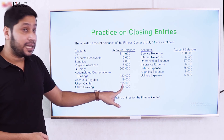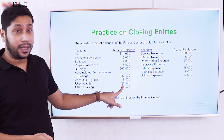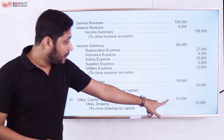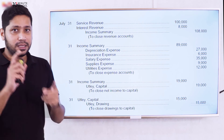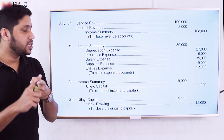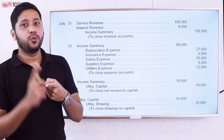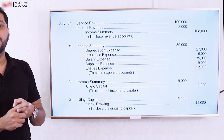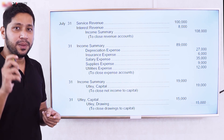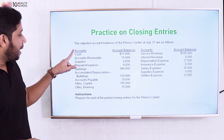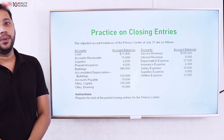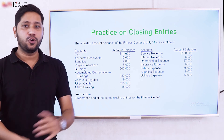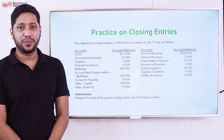After closing entries, the capital balance reflects the updated equity. The post-closing trial balance then shows only asset, liability, and owner's equity accounts with their updated balances. This concludes the lecture on closing entries and the post-closing trial balance. Thank you.